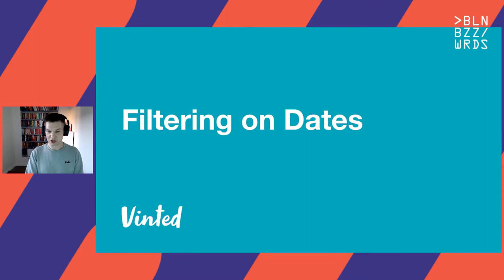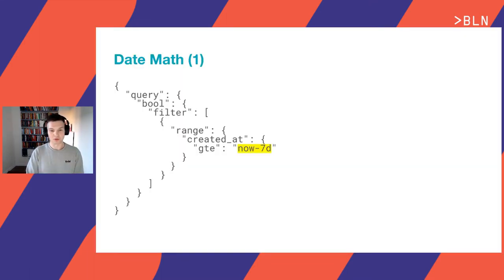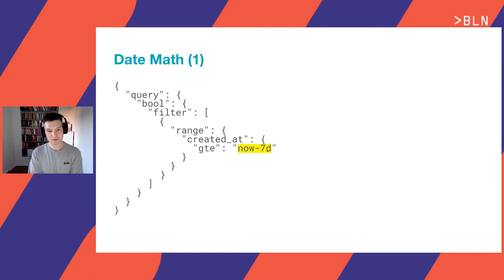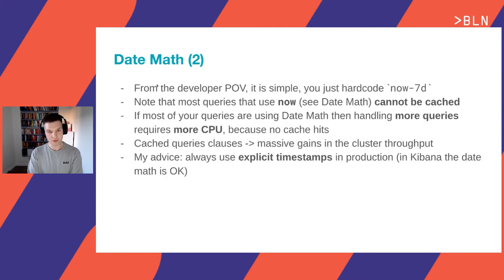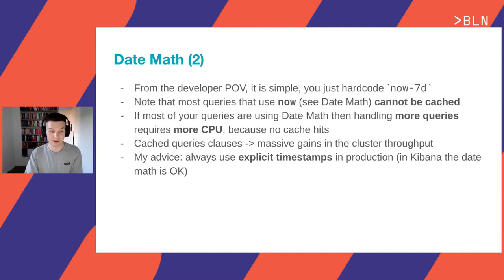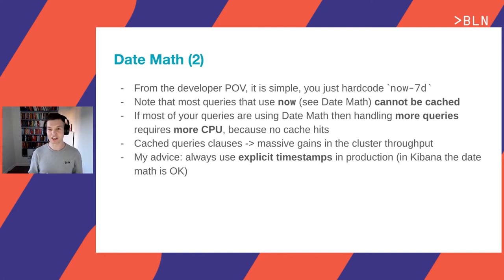Now let's talk about filtering on dates. By date math, I mean queries with clauses such as 'now minus 7 days.' From a developer's point of view, writing such a date filter is as simple as hardcoding a string 'now-7d' and you're done. However, if most of the queries you're sending to Elasticsearch use date math, the more queries you send, the more CPU it requires, because queries with date math cannot be cached — you're not leveraging Elasticsearch's cache.